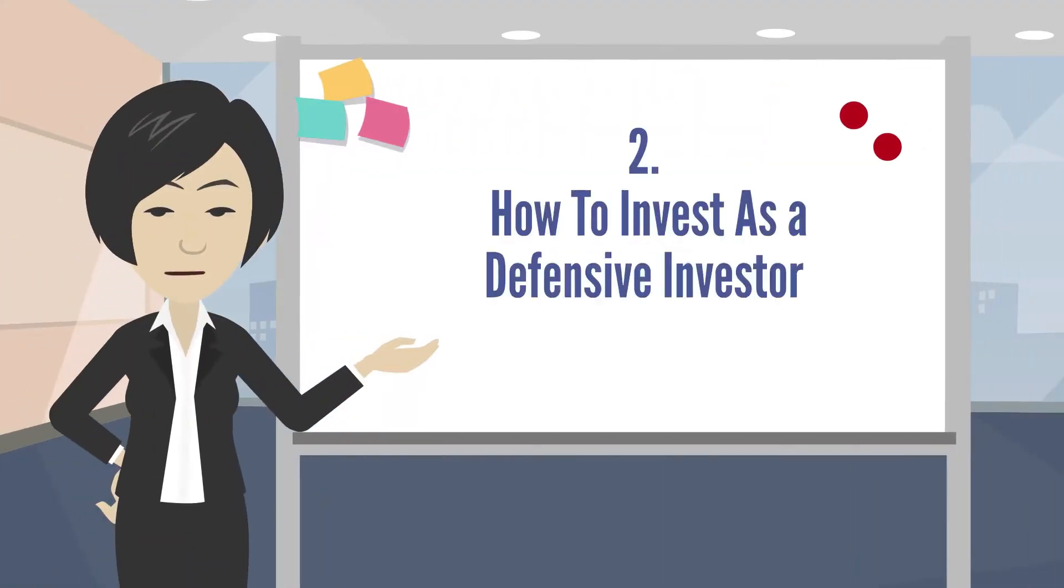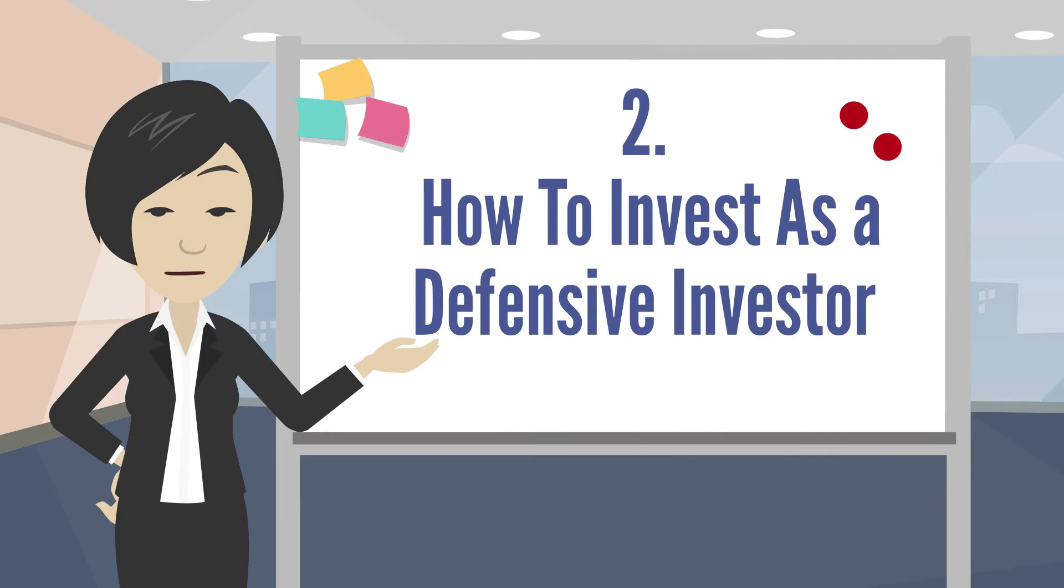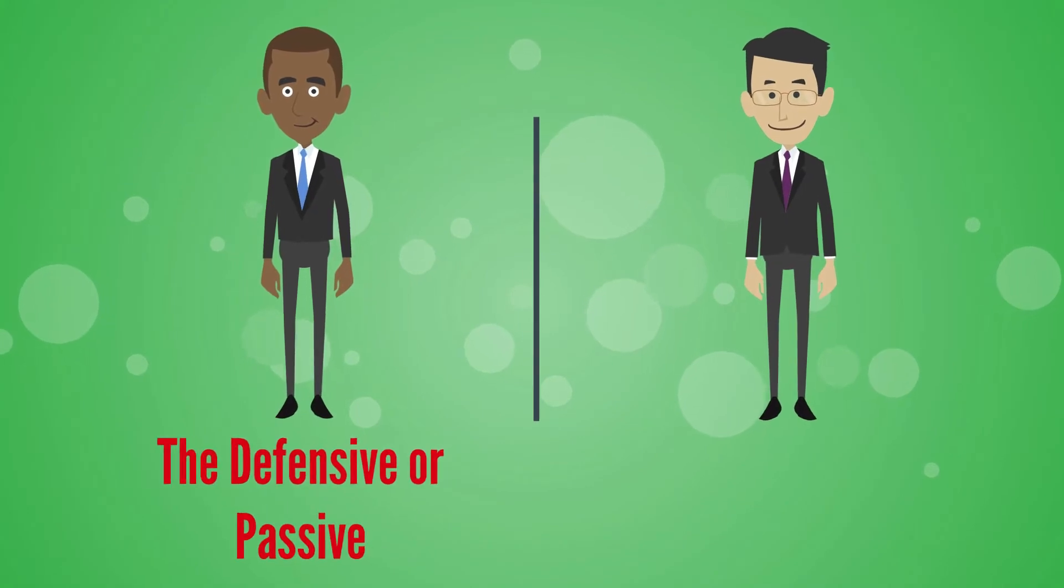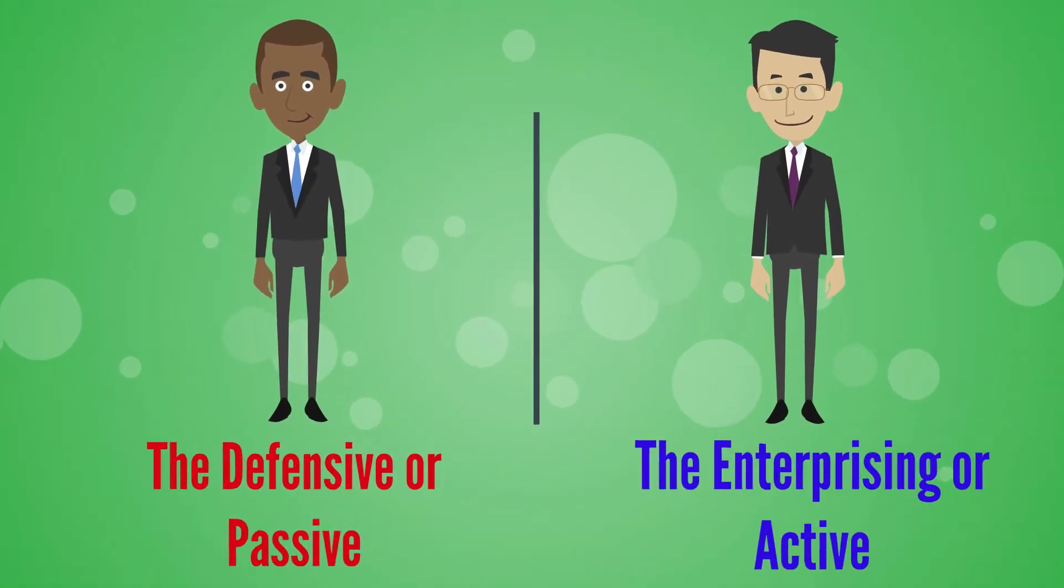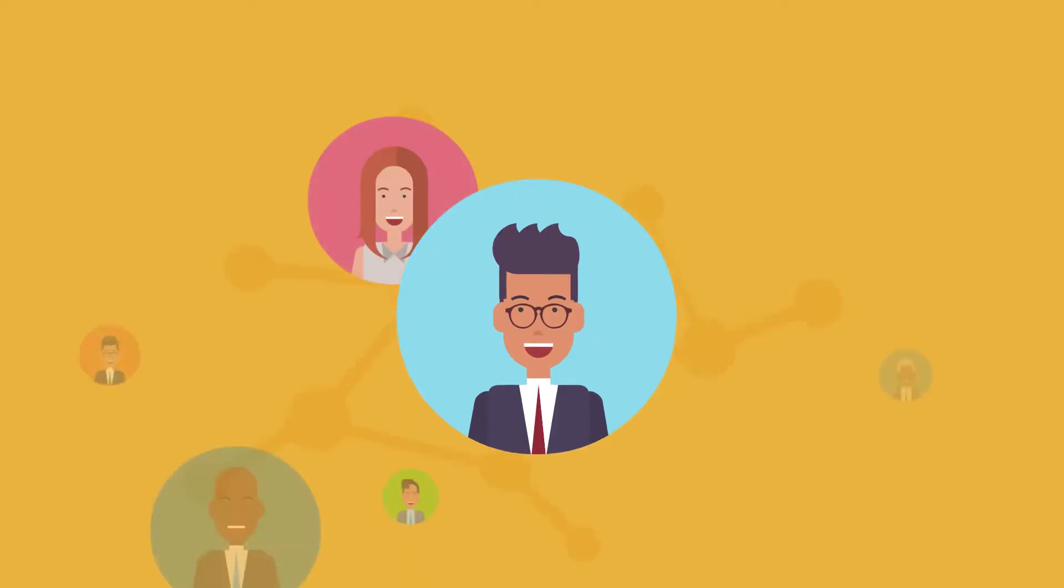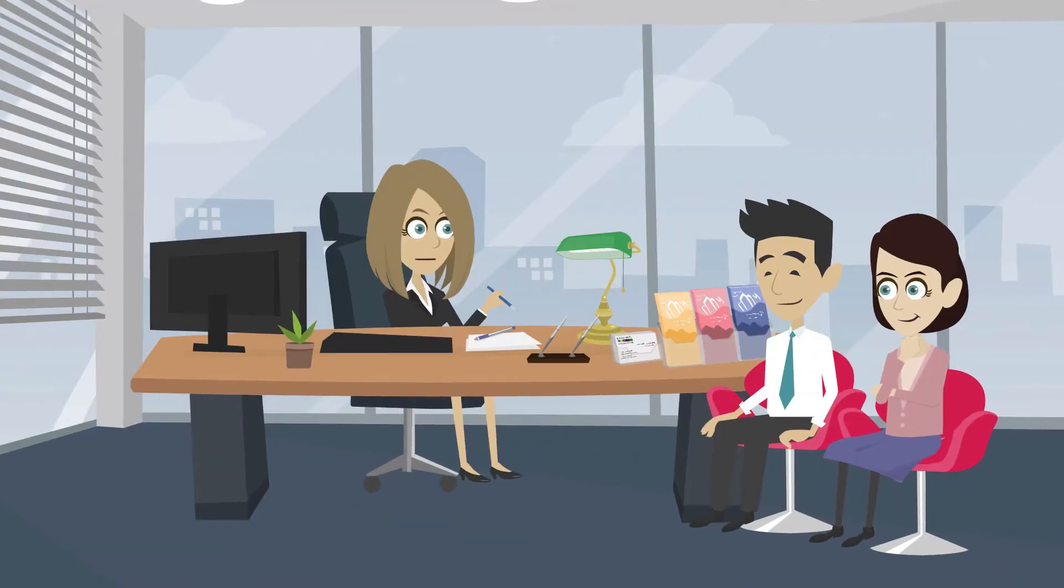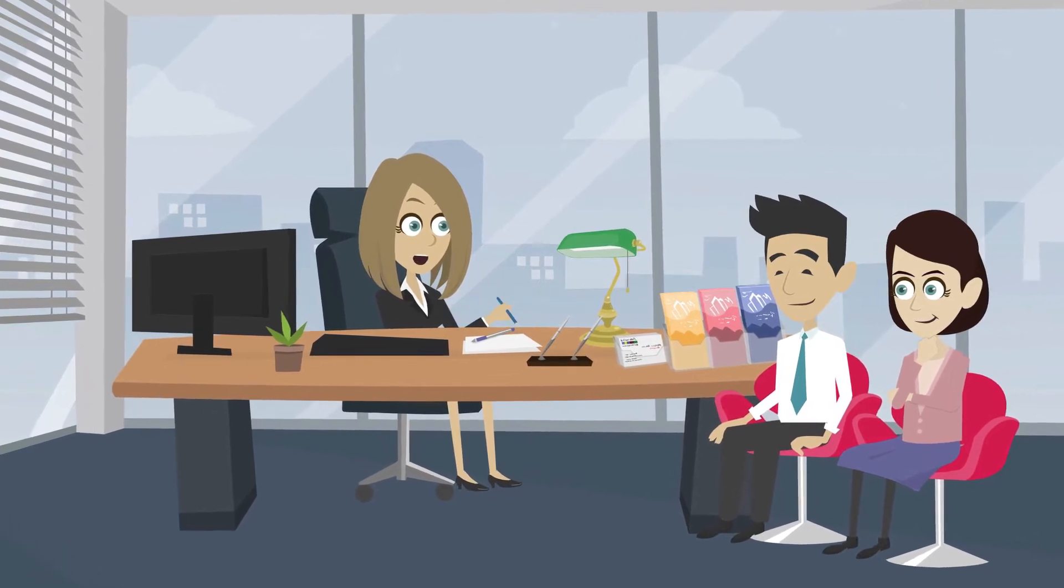Takeaway 2: How To Invest As A Defensive Investor. According to Graham, there are two kinds of investors: the defensive or passive one, and the enterprising or active one. The majority of people are a better fit for the defensive approach, as the time they want to commit to investing is restricted.